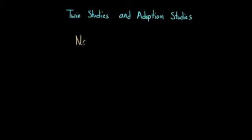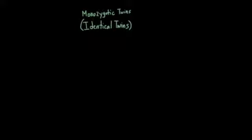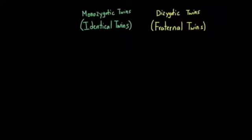Twin studies and adoption studies are very important in the behavioral and social sciences and in the health sciences. These studies help researchers tease apart nature—our genes, our genetic code—and nurture, our environment. They help us figure out what we inherit from our parents versus what comes from our interaction with the environment: where we live, our surroundings, our parents, our peers. There are two types of twins: monozygotic (identical) and dizygotic (fraternal).